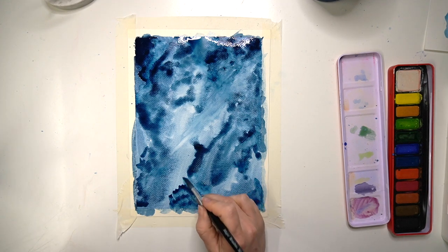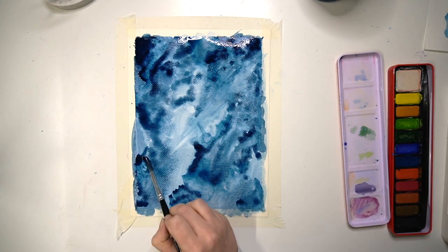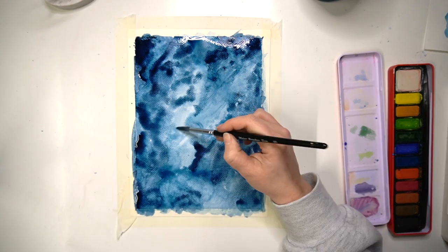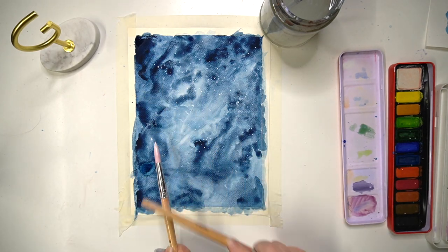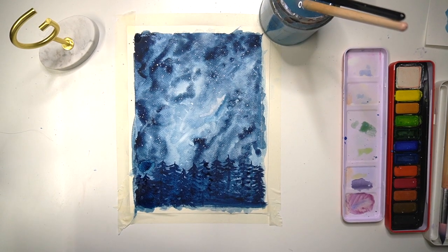You just need to keep working into it until you're happy with your composition of your little galaxy and keep building up lighter and darker colours across the page. Then let that dry fully before you add spatter stars across your work. Just be careful though because it can be very very messy.